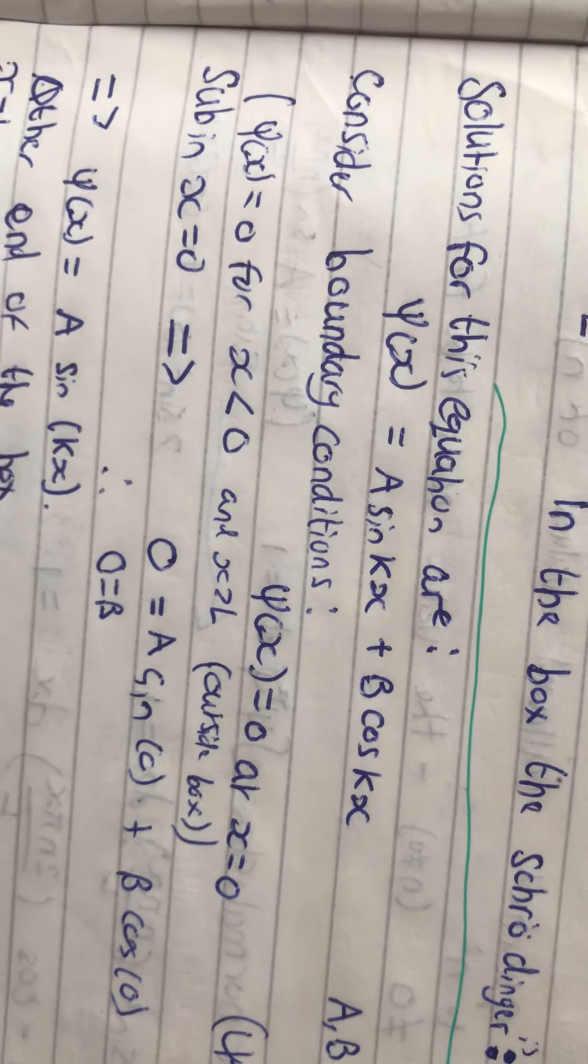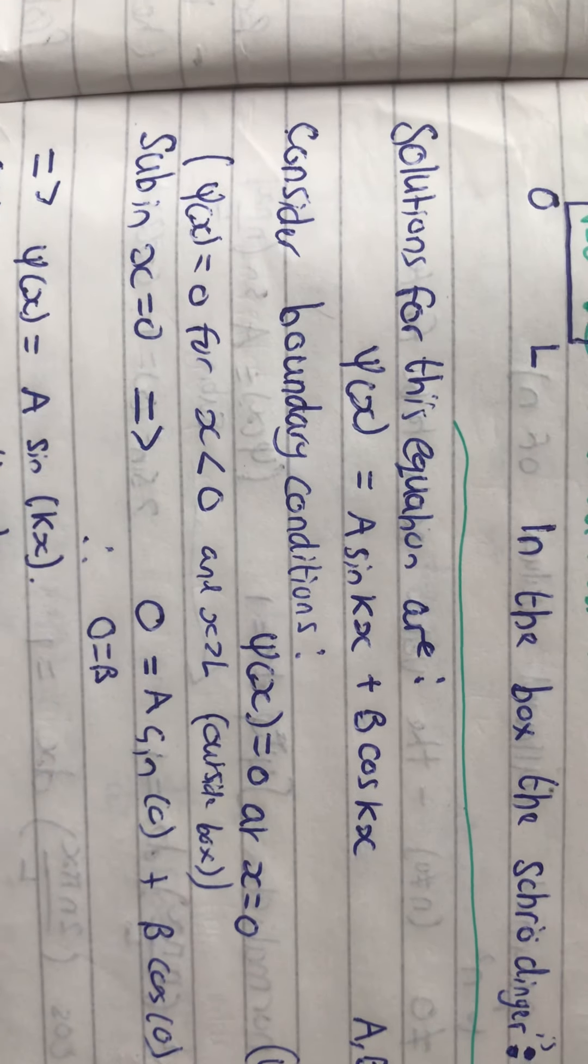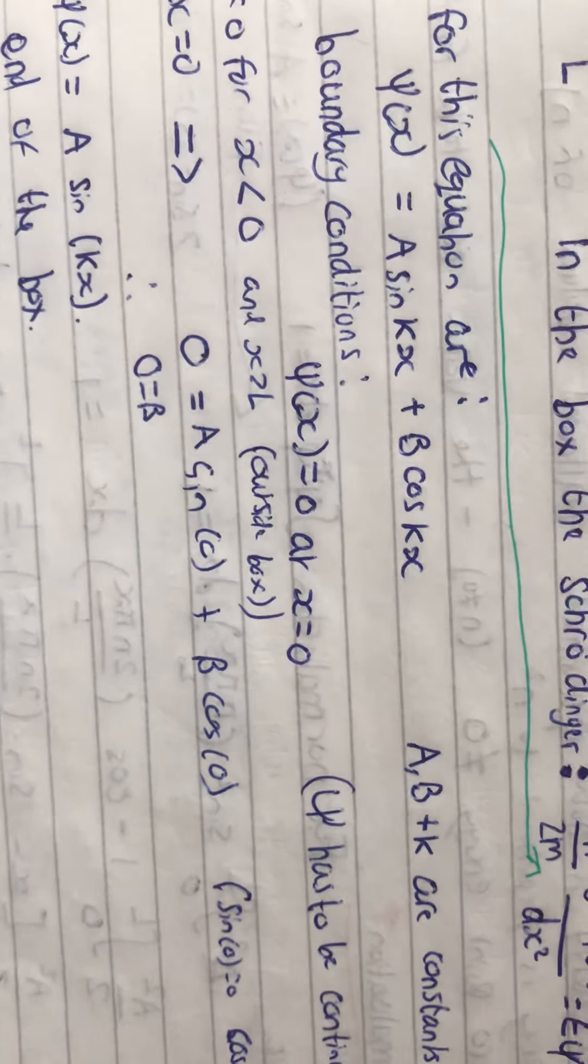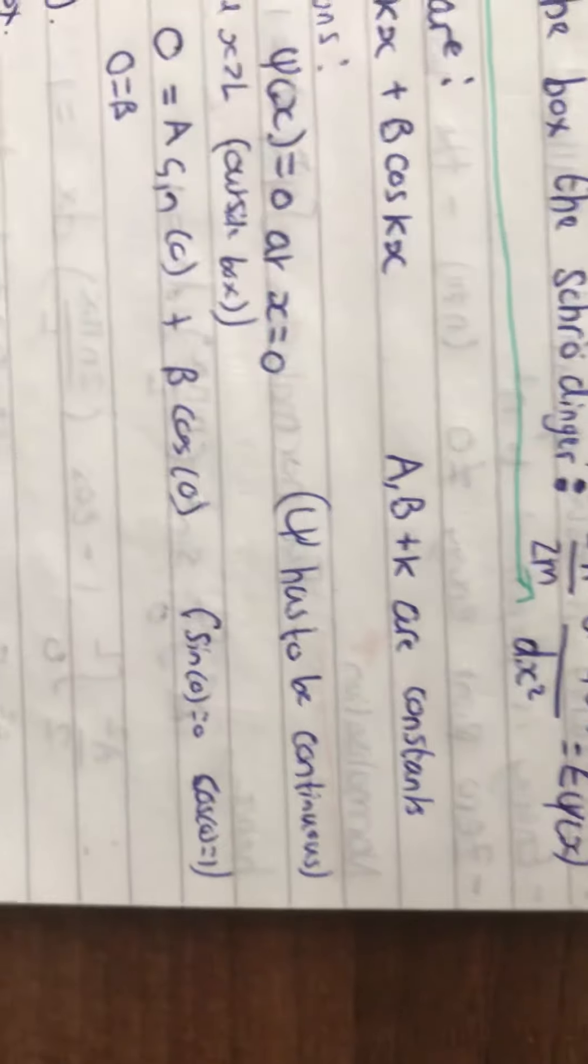So, the wave function equals 0 for when x is less than 0 and when x is greater than L, which is the conditions outside the box. Whereas in the box the wave function is continuous.